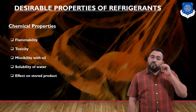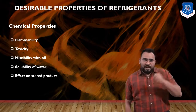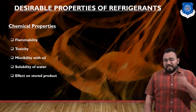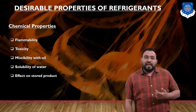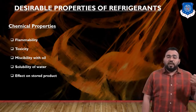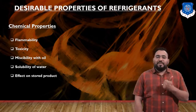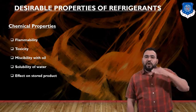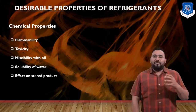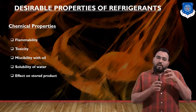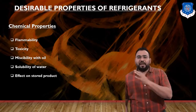Now we move on to chemical properties. First, flammability — it should be non-flammable and must not create an explosion inside the system. Second, toxicity — it should be non-toxic. If it is toxic, it will mix with the air and have a bad effect on humans as well as on the stored product. Third, miscibility with oil — miscibility means the property of a refrigerant to mix well with lubricating oil. If it mixes well with oil, the lubricating oil is easily carried with it through the system.